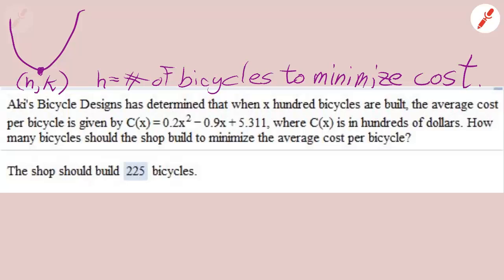Why would Aki want to minimize his cost? Well, so he could maximize his profits. Every entrepreneur wants to minimize their cost so they can maximize their profit. So let's fill in our formula for h. We have to know h before we can find k. k is what actually gets maximized or minimized. In this case it's going to be the minimum cost, but we have to find the number of bicycles.